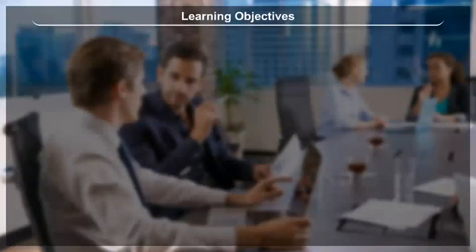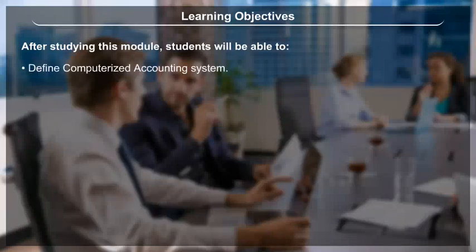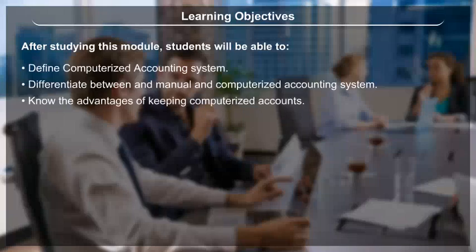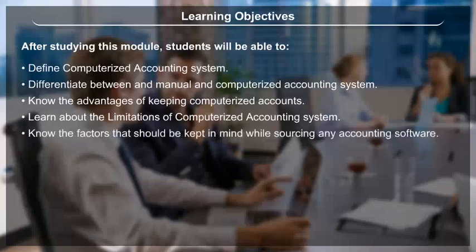Learning Objectives. After studying this module, students will be able to: define computerized accounting system, differentiate between manual and computerized accounting system, know the advantages of keeping computerized accounts, learn about the limitations of computerized accounting system, and know the factors that should be kept in mind while sourcing any accounting software.